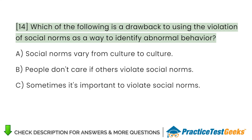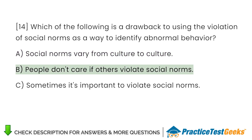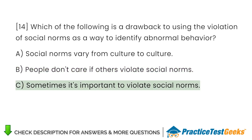Which of the following is a drawback to using the violation of social norms as a way to identify abnormal behavior? A. Social norms vary from culture to culture B. People don't care if others violate social norms C. Sometimes it's important to violate social norms